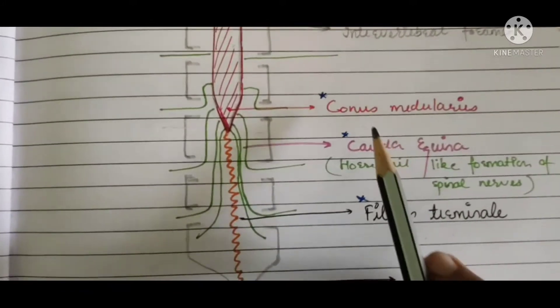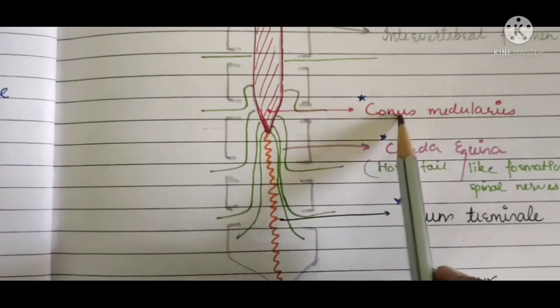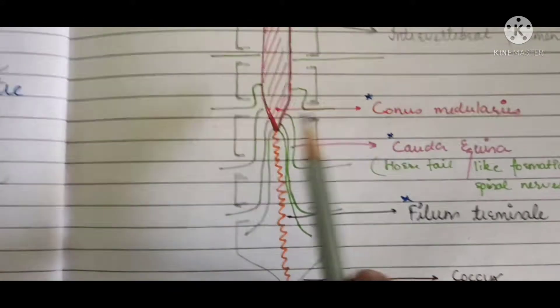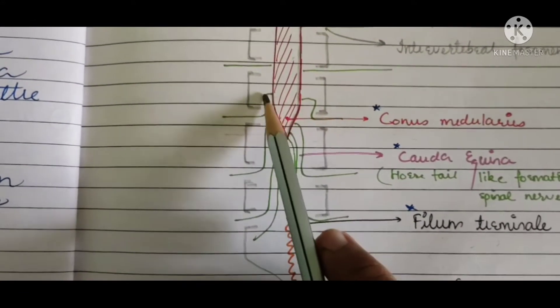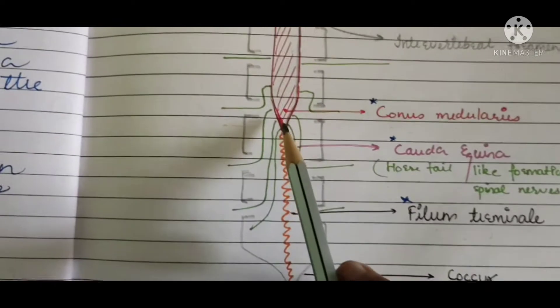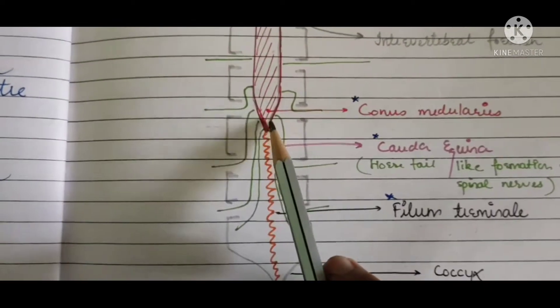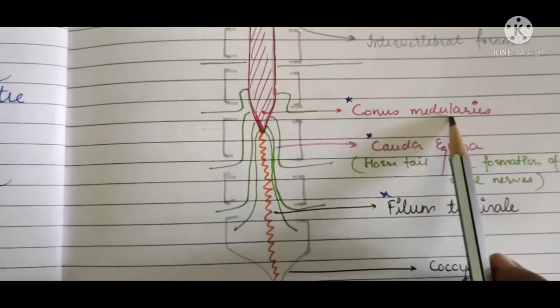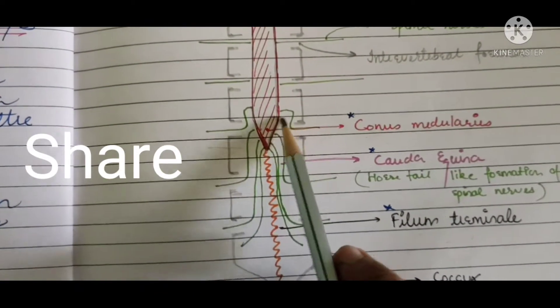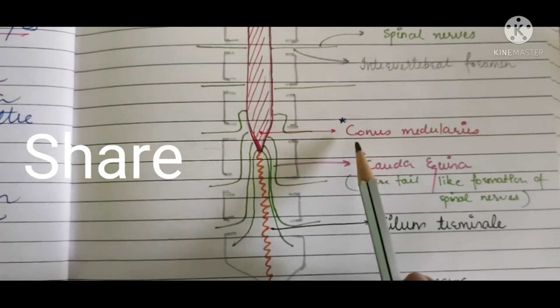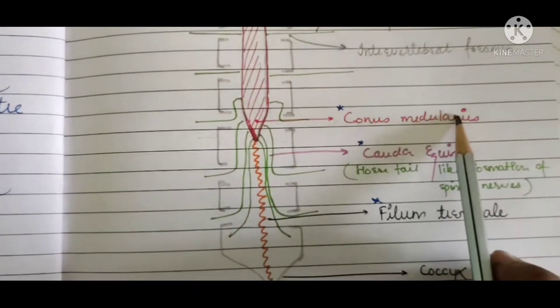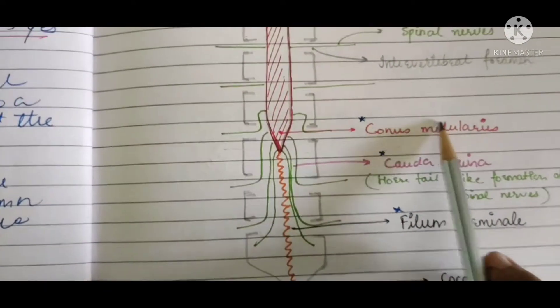That is what we call conus medullaris. Conus means cone-like. If you see this carefully, it is resembling like a cone, like an ice cream cone. So this spinal cord is ending as a point or cone, that is what we call conus medullaris. So I hope this is clear to you.